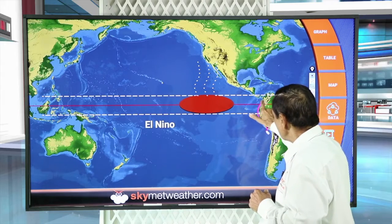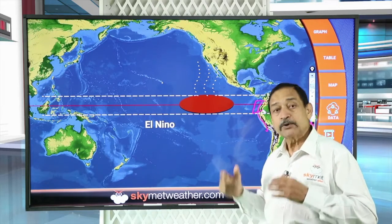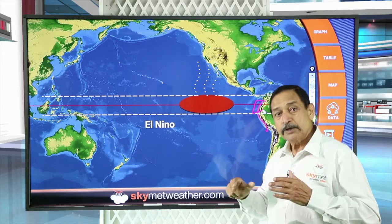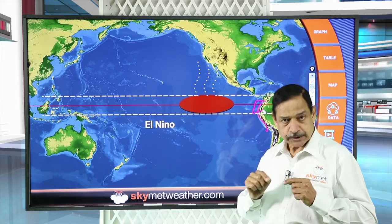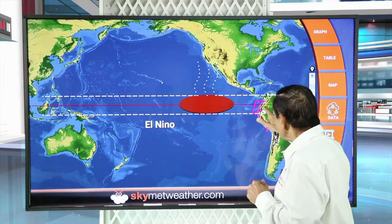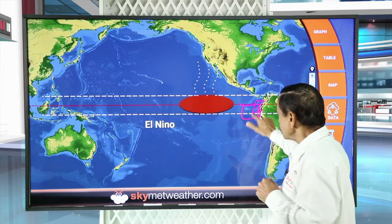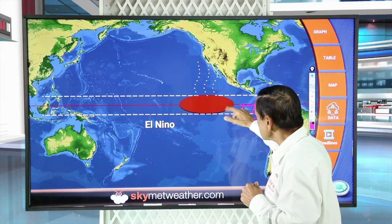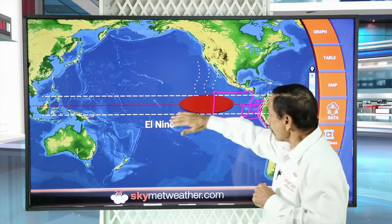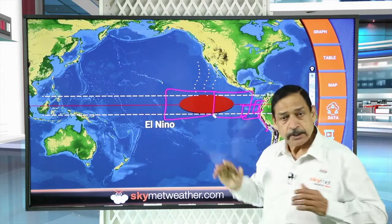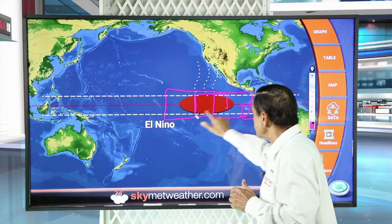There are four Nino indices, which we call ONI — Oceanic Nino Indices: Nino 1+2, Nino 3, Nino 4, and Nino 3.4. Nino 3.4 is the principal measure for monitoring, processing, and predicting the monsoon. Nino 1+2 is south of the equator only, 0 to 10 degrees south. Nino 3 is plus or minus 5 degrees on either side of the equator. Nino 3.4 is composed of one-third of Nino 4 and two-thirds of Nino 3.